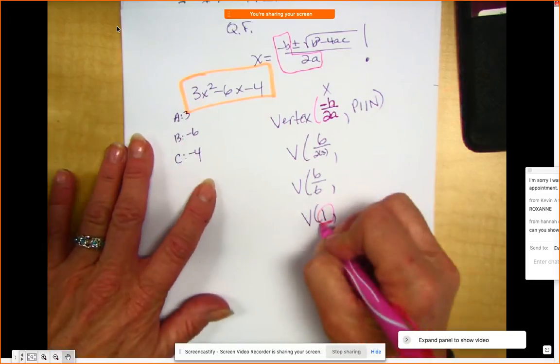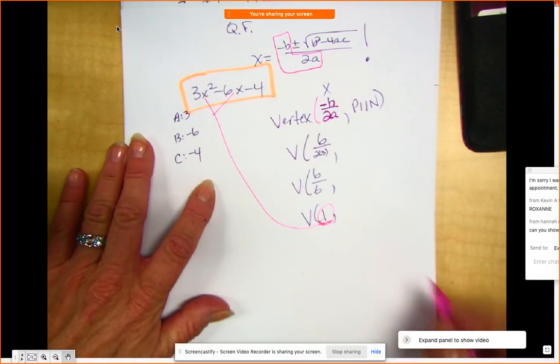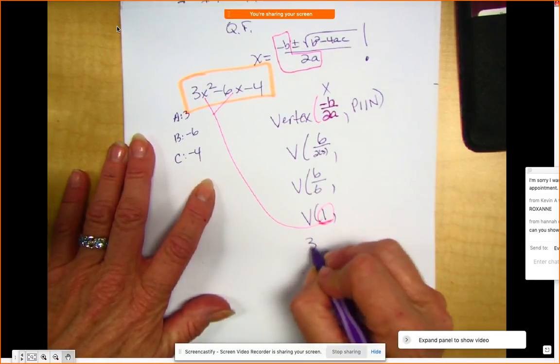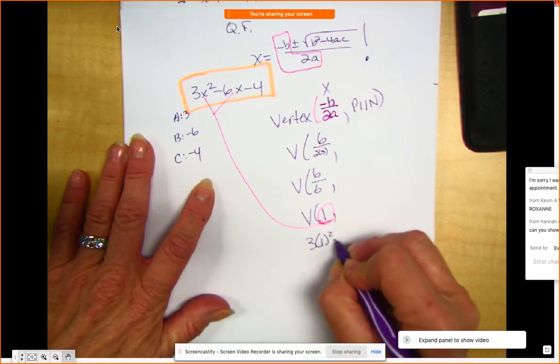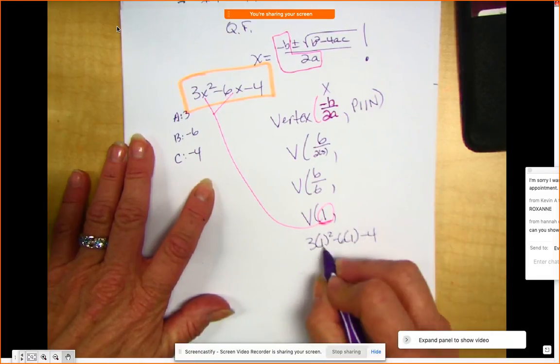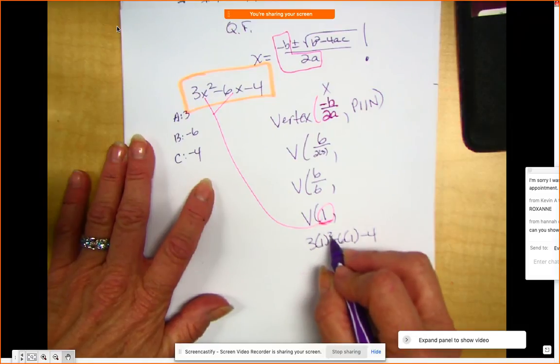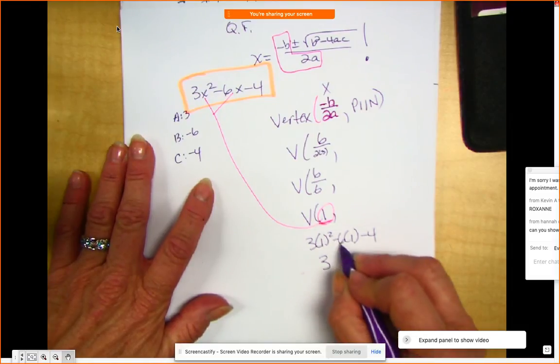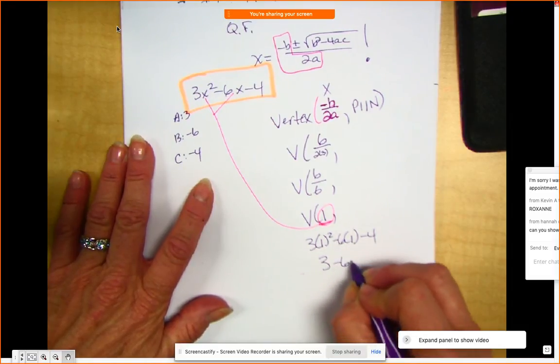So this 1 is going to go in for x up here and here. So I've got 3 times 1 squared minus 6 times 1 minus 4. 1 squared is 1. You always do exponents first. 1 times 3 is 3. Negative 6 times 1 is negative 6 minus 4.